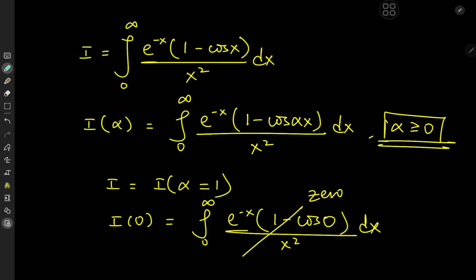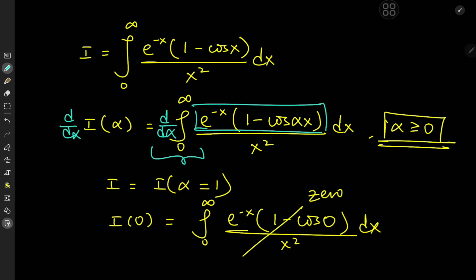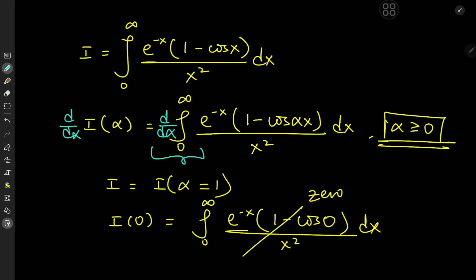So now that we have a plan, we need to differentiate the integral function with respect to the parameter alpha. The big question is whether or not we can switch up the order of the integration and differentiation operators. That depends on the convergence of the integral function. Notice that in the numerator we have a bounded function of both x and alpha, and this bounded function is being multiplied by 1 over x squared, which is a decreasing function on the interval of integration. So the integral function does indeed converge.